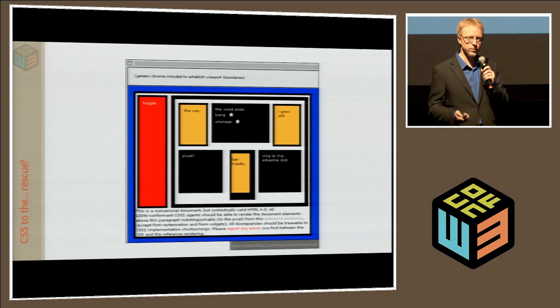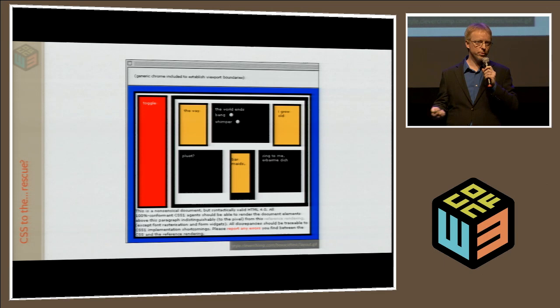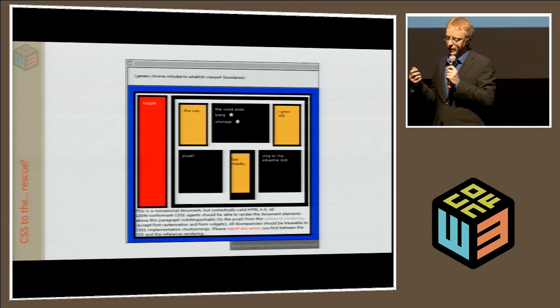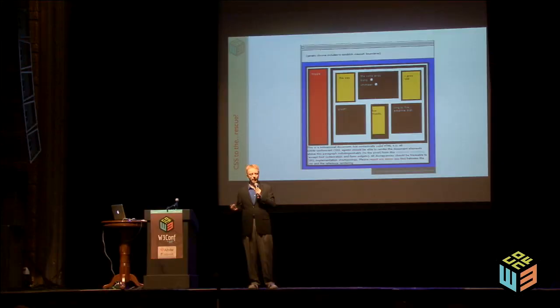You could do all kinds of amazing things with floats — this is the acid test created by Todd Farner. And you could sort of fake layout, but that's all you were doing. You were faking. So when working on CSS2, the working group looked at what designers were doing and came to the conclusion that, hey, people want to lay stuff out. Who knew? People actually want to arrange things on the screen, so we're going to give them a system. We're going to give them positioning.